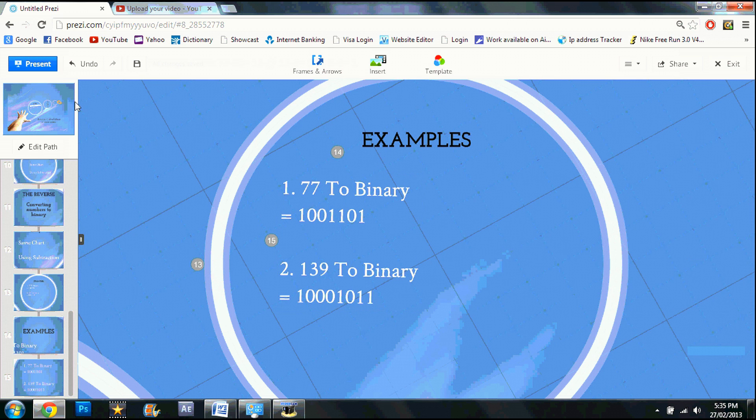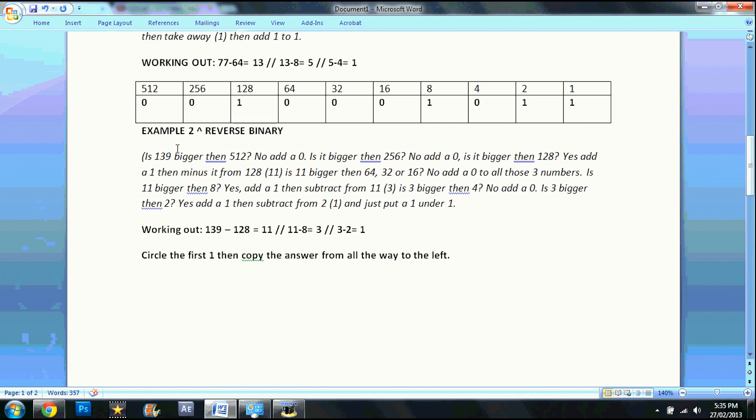Example 2. 131 to binary. So 131. Is 131 bigger than 512? No. Is it bigger than 256? No. Put 0s. Is 131 bigger than 128? Yep. Subtract them. And that should be 11.